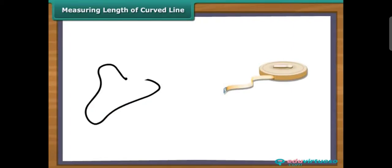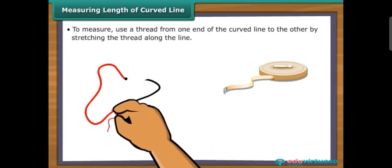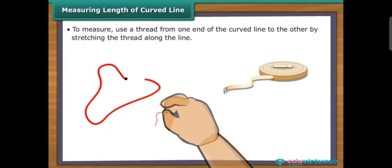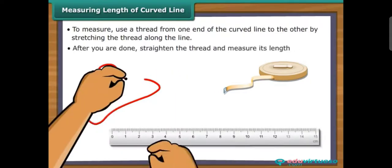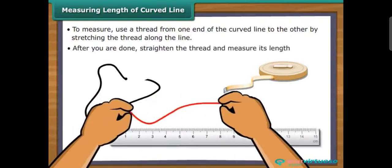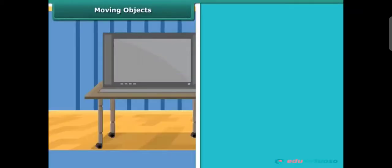Measuring the length of a curved line — to measure a curved line, a standard measuring tape will not be enough. You will have to use a different mechanism to arrive at the correct length. To measure, you use a thread along the curve — from one end of the curved line to the other end, stretching the thread along the line. After you're done, straighten the thread and measure its length. You will then know the length of the curved line accurately.